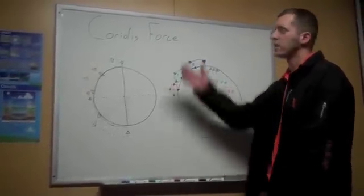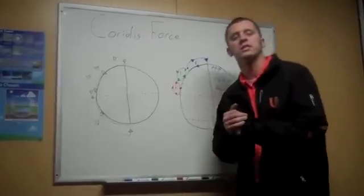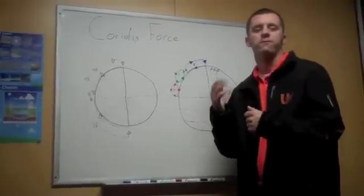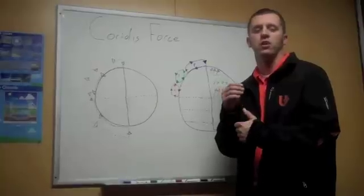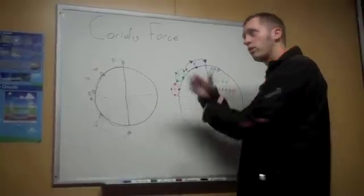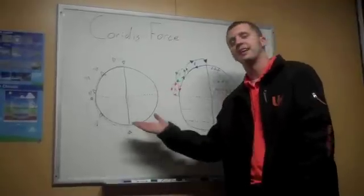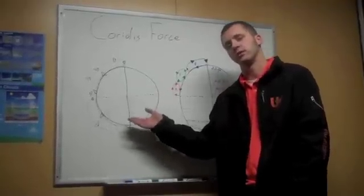Today we're going to talk about Coriolis force. Coriolis force is the force that deflects objects that are flying over the surface of the earth to the right in the northern hemisphere, and to the left if they're flying over in the southern hemisphere.